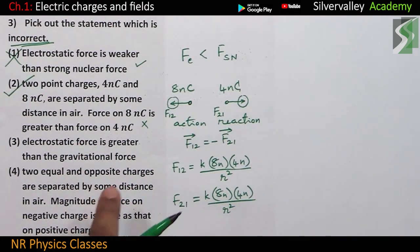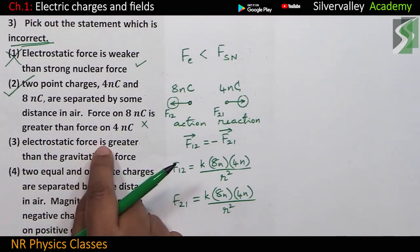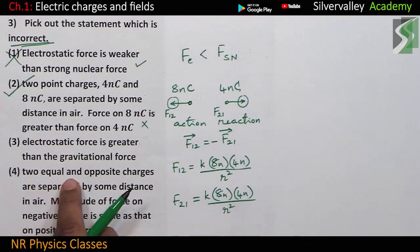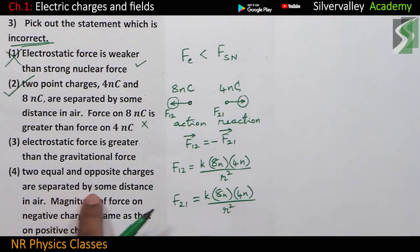You don't have to check these two. But still, since it is for practice, let us check. Electrostatic force is greater than gravitational force. True. Two equal and opposite charges are separated by some distance in air. Magnitude of force on negative charge is same as that on positive charge.